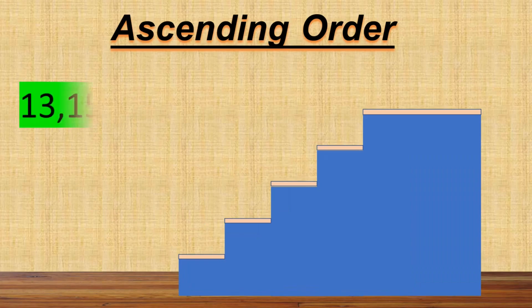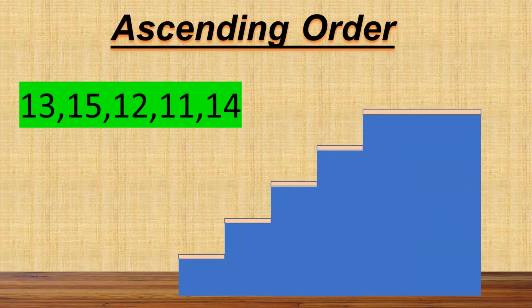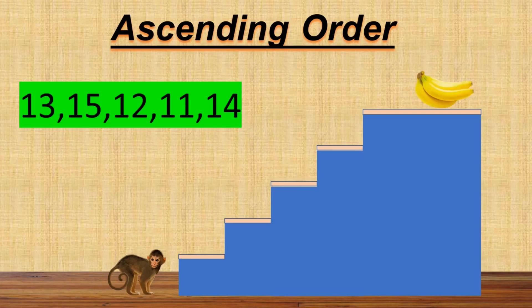Look at these numbers. They are not in ascending order. Let's learn about ascending order with Mr. Bingo the monkey. Mr. Bingo wants to go up and get his banana. For that, the numbers should be arranged in ascending order. So kids, let's all help Mr. Bingo to go up and get his banana.